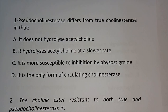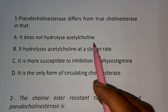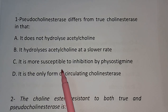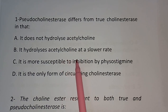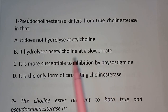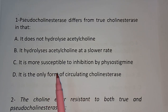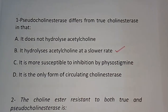Question number one: Pseudocholinesterase differs from true cholinesterase in that: (A) it does not hydrolyze acetylcholine, (B) it hydrolyzes acetylcholine at a slower rate, (C) it is more susceptible to inhibition by physostigmine, (D) it is the only form of circulating cholinesterase. The correct answer is option B — it hydrolyzes acetylcholine at a slower rate.